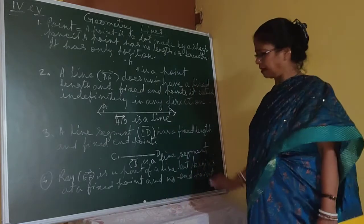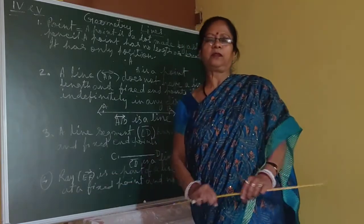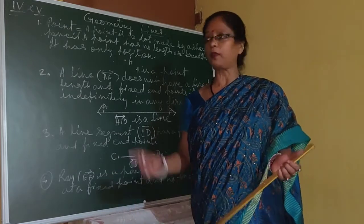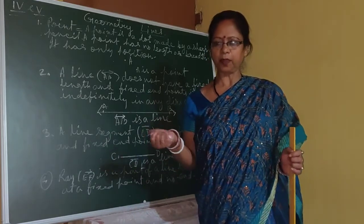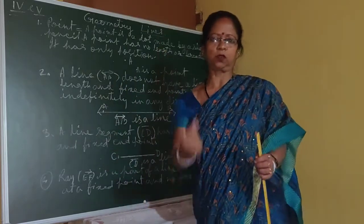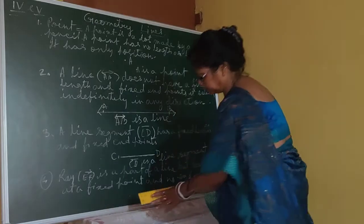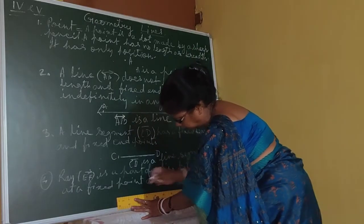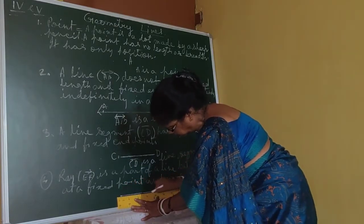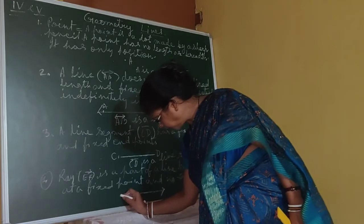CD is a line segment. Then, what is a ray? We generally talk about sun rays and torch rays. A ray has one fixed point — like a torch has one fixed point and the rays go on from it. From the sun we get rays, but rays don't pass back through the source. So it is called a ray — it starts from one fixed point, with one starting point and no ending point. You give one side arrow on top.